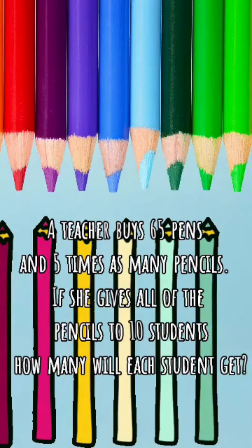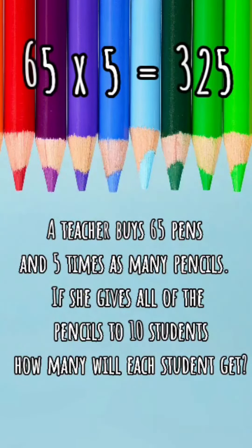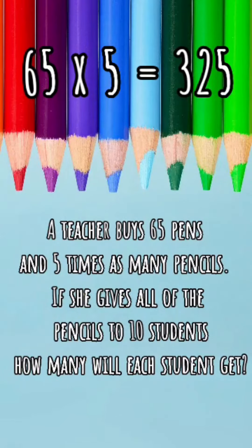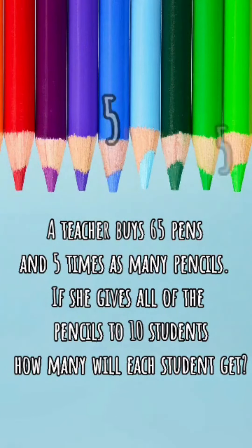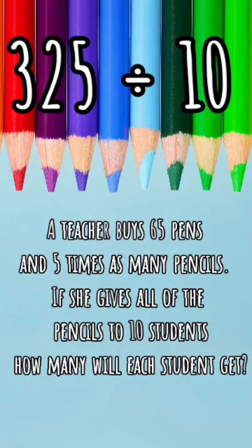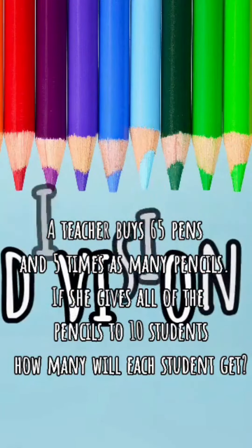Five times more than 65 is 325 pencils. Now, she needs to share these pencils evenly with 10 students. If I'm sharing something evenly, I can use the operation of division.